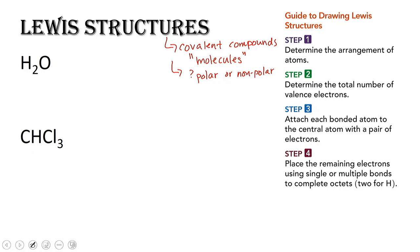So how do we do that? Step one: determine the arrangement of the atoms. Step two: determine the total number of valence electrons. Step three: attach bonds to these atoms. And then place the remaining electrons around the peripheral atoms. So first, to determine the arrangement of the atoms, there are two things you do.